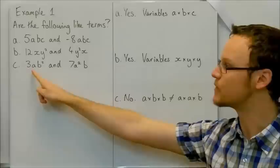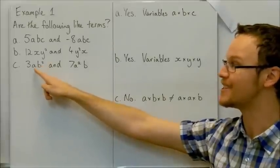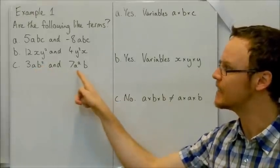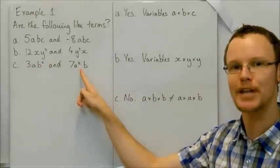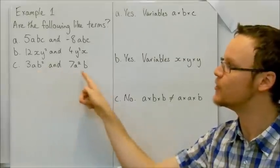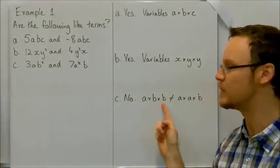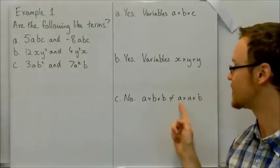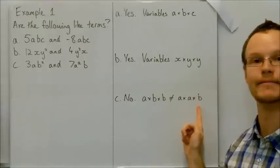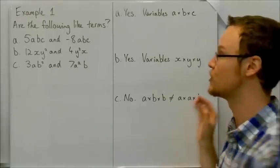For c, we've got a, b squared. So that's a times b times b. And here we've got a times a times b. They're not like terms. They're not the same combination. a times b times b is not the same as a times a times b. So they are not like terms.